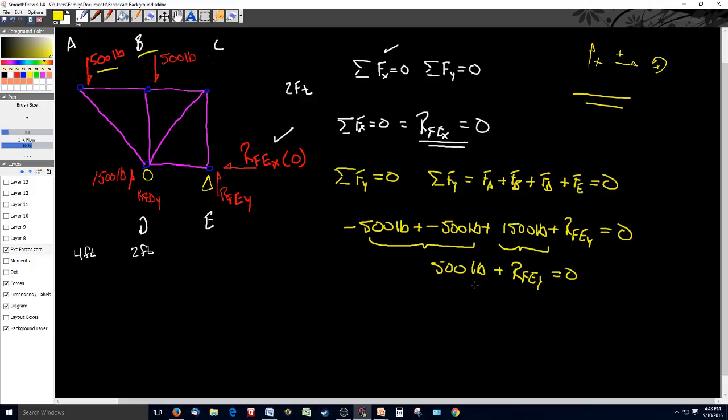Now you can see real quickly, if I take 500 pounds off of both sides of this equation, minus 500 pounds, do the same thing on the other side of the equation, I now get RFEY equals a minus 500 pounds.